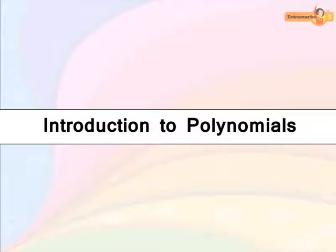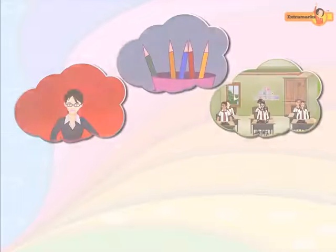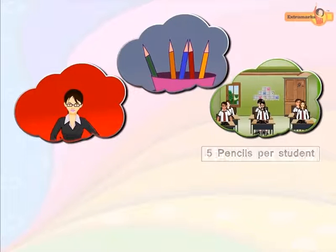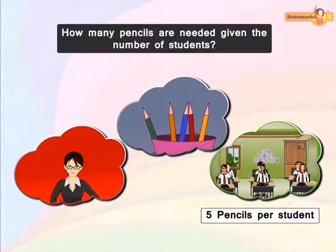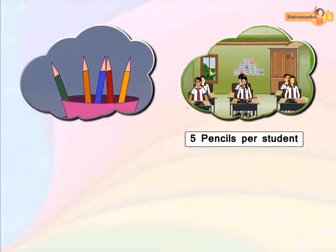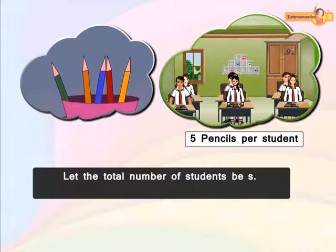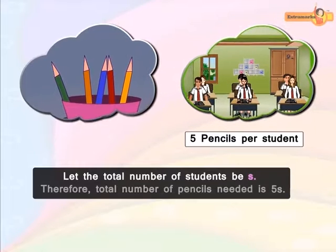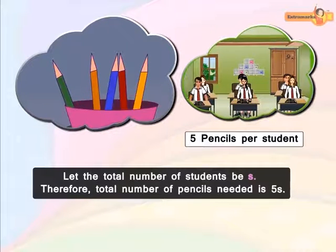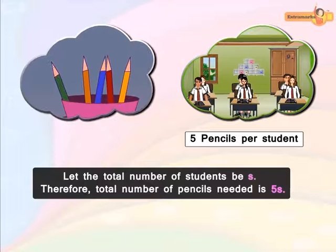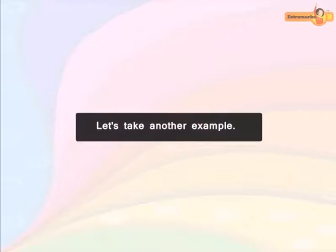Let us learn about polynomials. The teacher distributes five pencils per student. Can you tell how many pencils are needed given the number of students? Let the total number of students be s. Therefore, the total number of pencils needed is 5s.